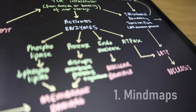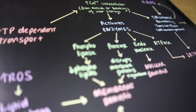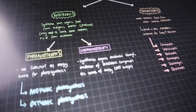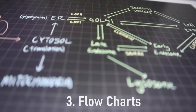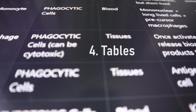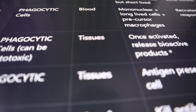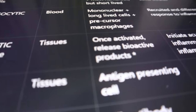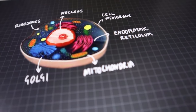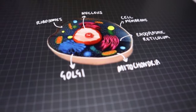Back to biology — there were five main visuals I used to help me see connections between different concepts. Number one: mind maps, which help link scattered concepts. Number two: tree diagrams, which help link concepts that have a hierarchy. Number three: flow charts, which help link concepts that have a sequence. Number four: tables, which help link concepts that have similarities or differences. Number five: annotated diagrams, which help link concepts in an overall picture.